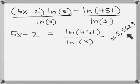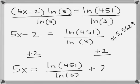I'm going to take the alternate approach and deal with this expression and have a more complicated, exact expression, and plug that into the calculator. Looking at the equation, I have 5x minus 2 equals ln 451 divided by ln 3. To solve for x, I'm going to add 2 to both sides. I'll wind up with 5x equals ln 451 divided by ln 3 plus 2. There's no real way to combine that or simplify it.